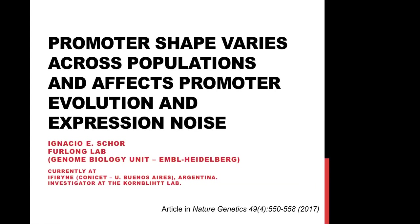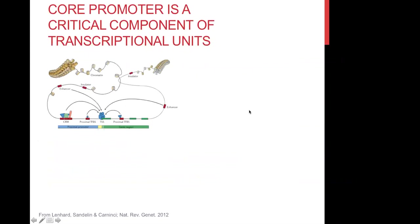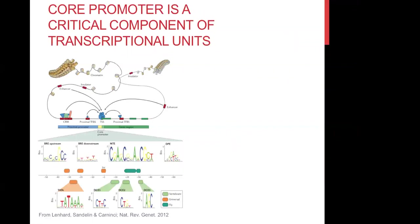The idea of the title was to introduce you to the object of the work, which is the core promoter of a gene. When we talk about the promoter, you can think of a bigger version that includes both the core promoter and what we call the promoter proximal regulatory region — the proximal enhancer regions, let's say. But we actually refer to the core promoter as the collection of very defined motifs in charge of recruiting the general transcription factors, which in turn recruit RNA polymerase II in eukaryotes and, with the help of regulatory regions such as enhancers, initiate transcription.